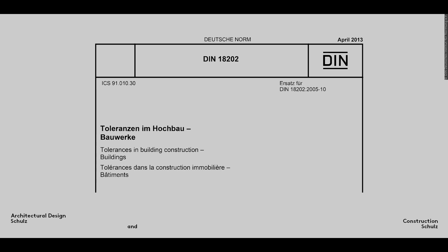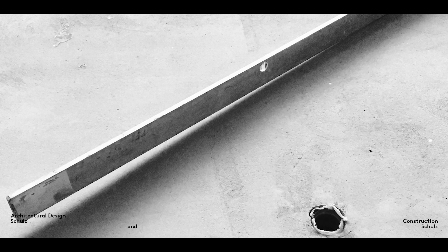DIN 18202, Tolerances in Building Construction: Buildings, stipulates the acceptable tolerance ranges and when deviations from these ranges become defects. It defines a deviation as the difference between a nominal dimension and an actual dimension. A nominal dimension is the planned dimension specified in a construction drawing, while an actual dimension is one produced by a tradesman or woman on site and measured in situ.